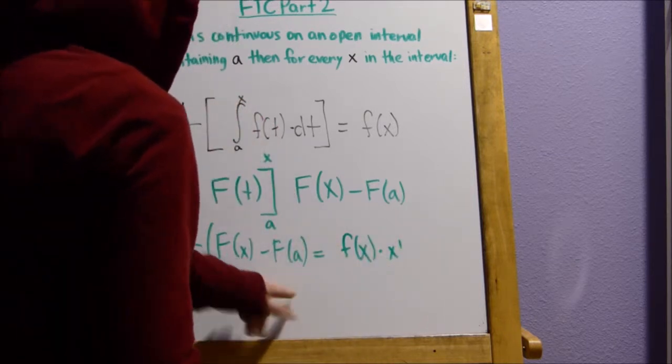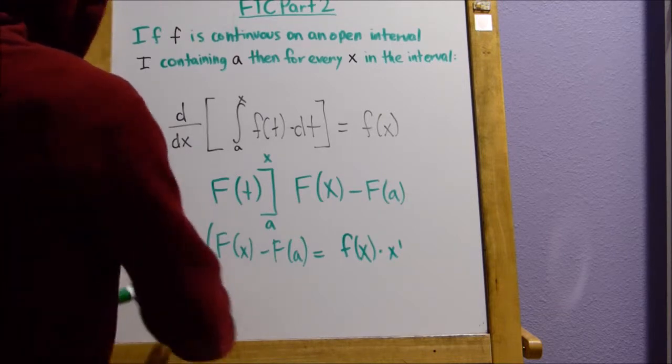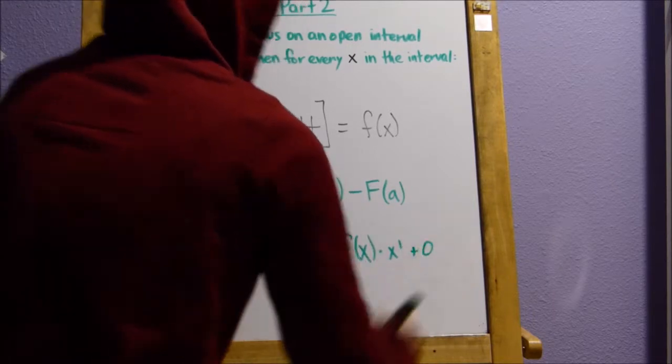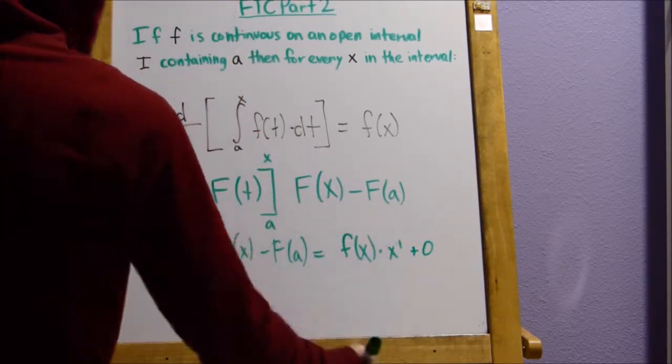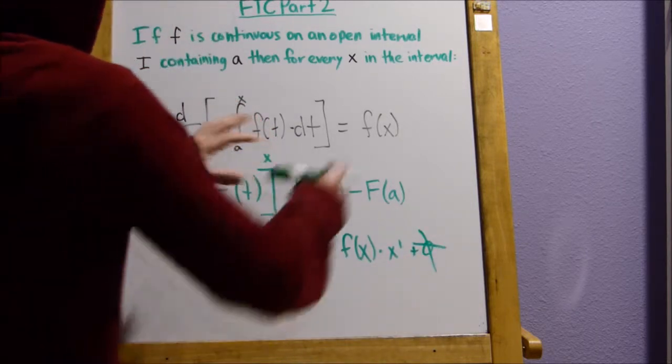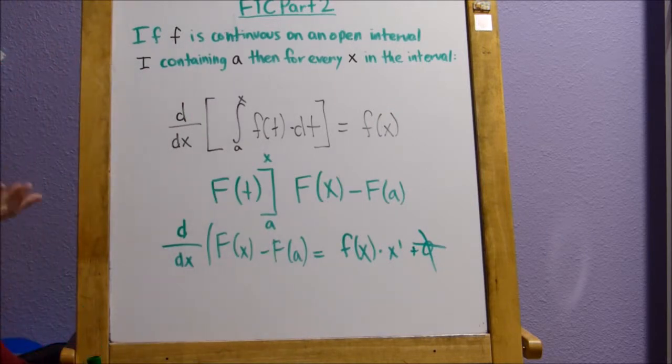But now we have f of a. f of a is going to be a number. Now, if you take the derivative of a number, you're going to get zero. So it's going to be f of x times x prime plus zero. So this is zero we don't even need. So that's why a isn't really incorporated into this final thing that we get from FTC part two.